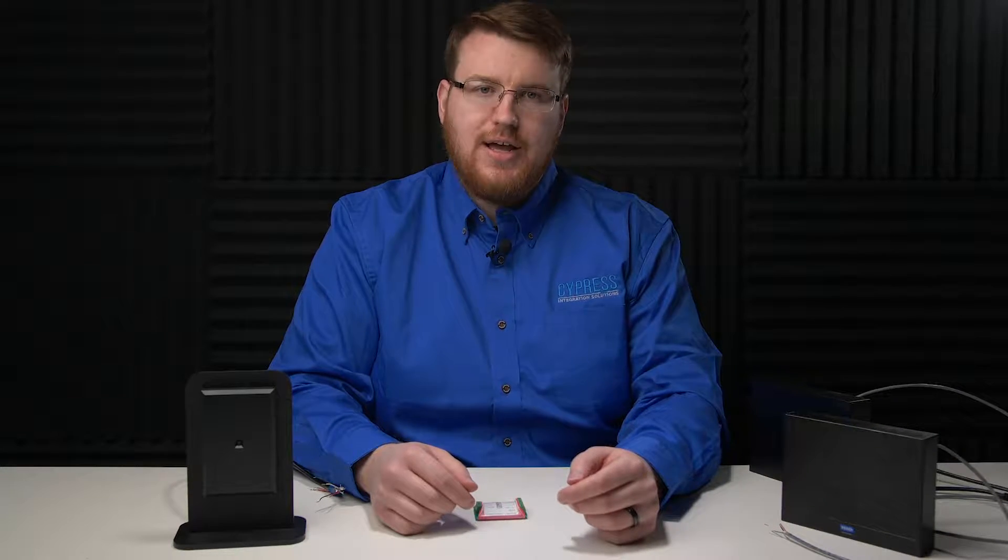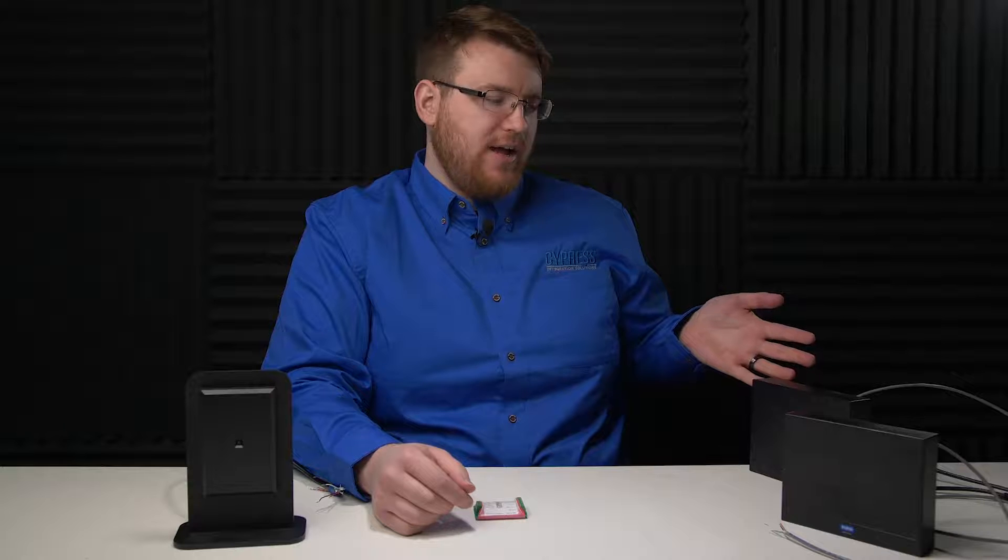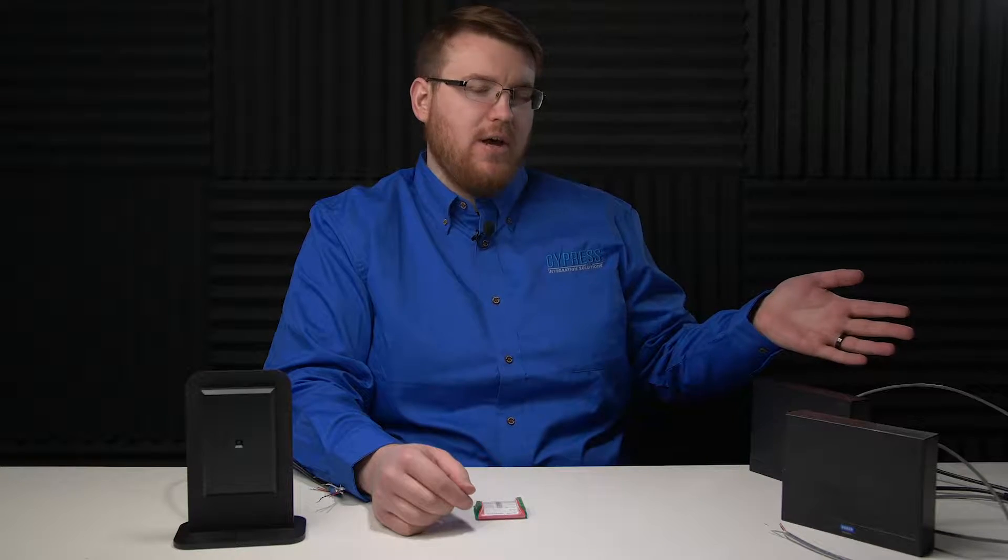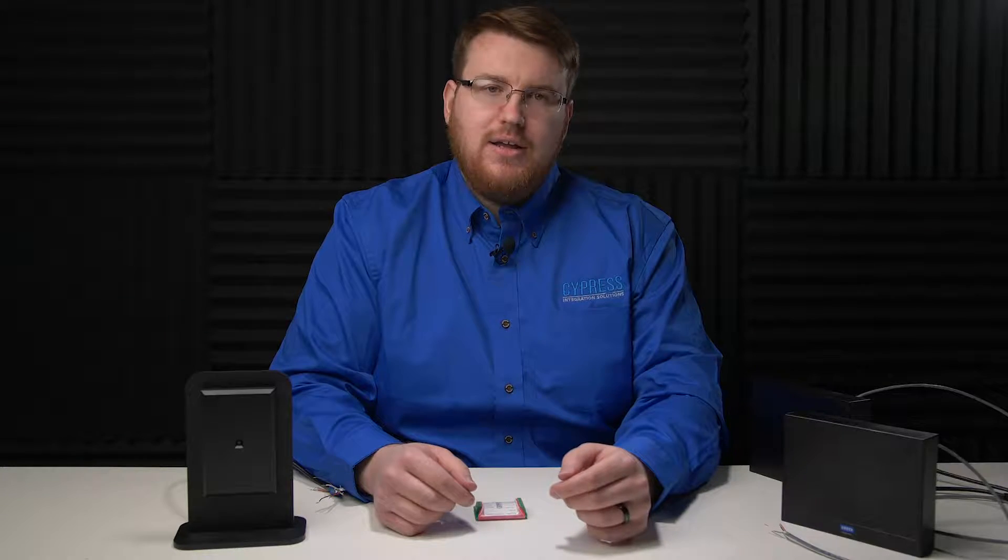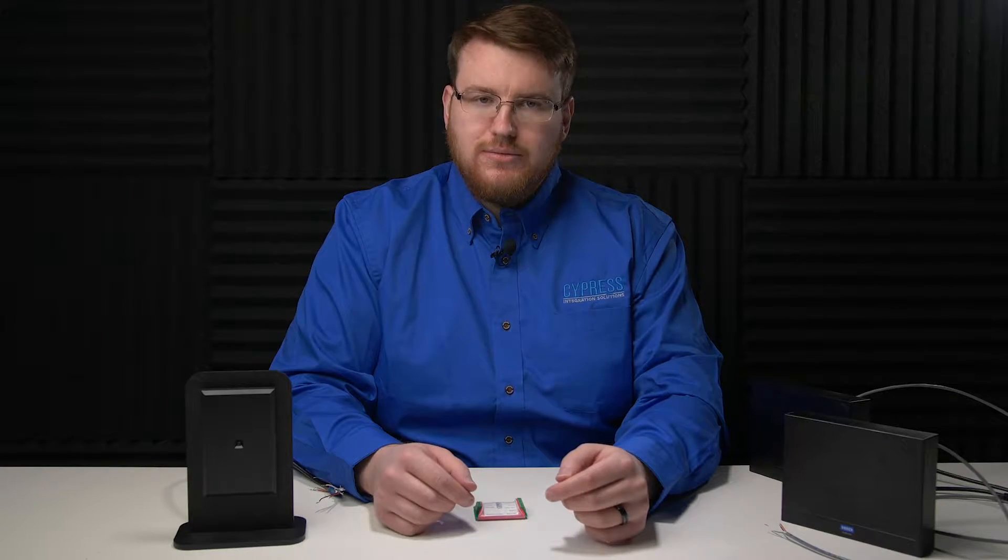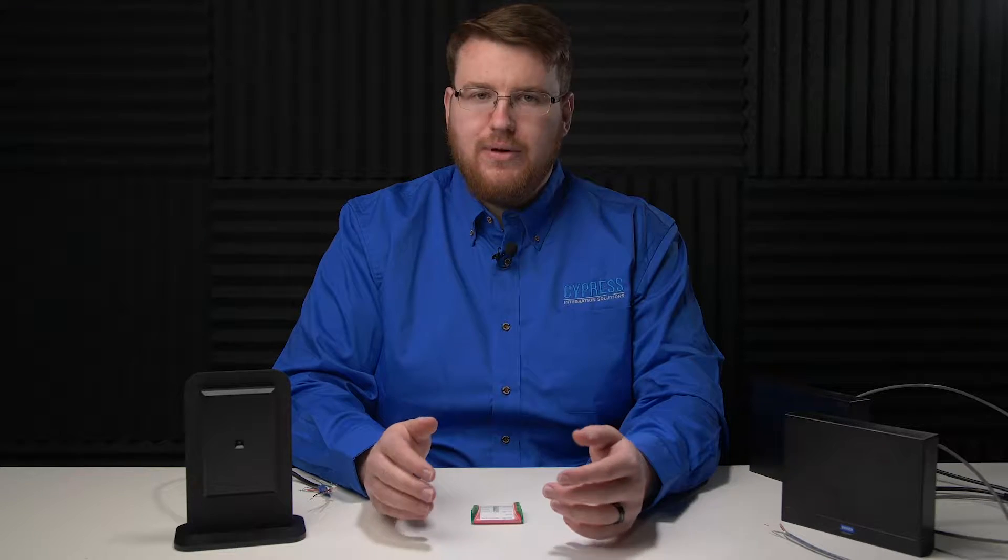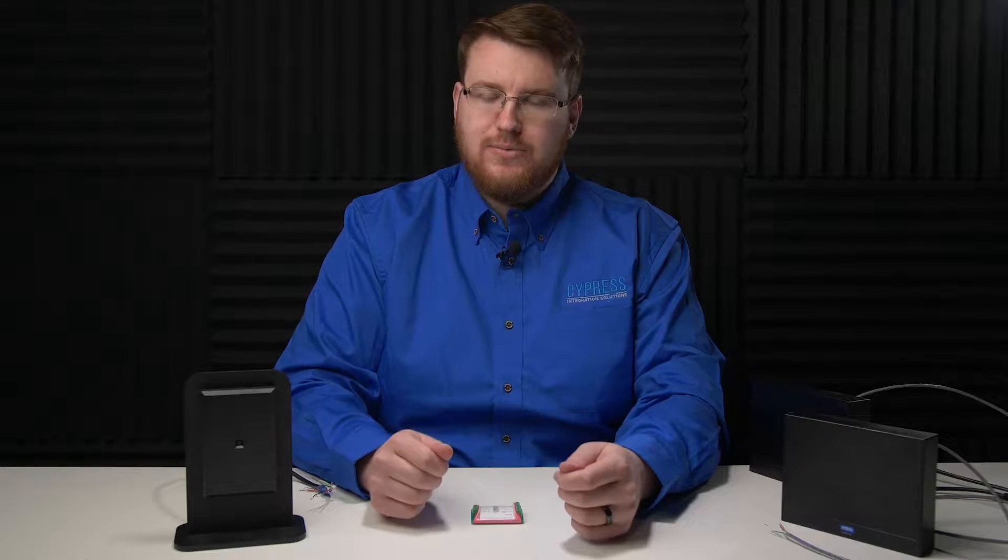For demonstration purposes, access controllers A and B are HID edge devices connected to AMT's web-based access control software. You can use this setup for the CVX OPTW with any Wiegand access controllers. First I will connect the Wiegand reader to the J1 header of the CVX OPTW.